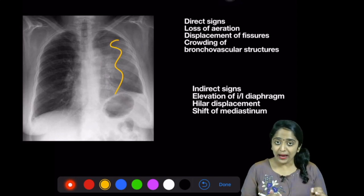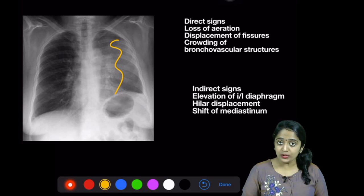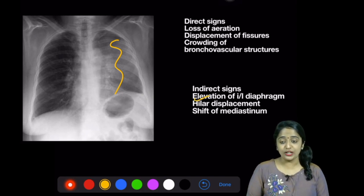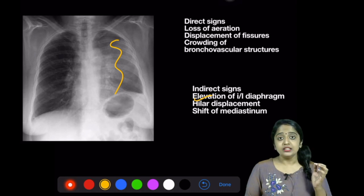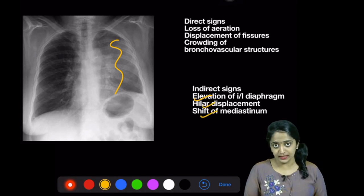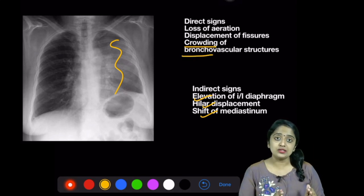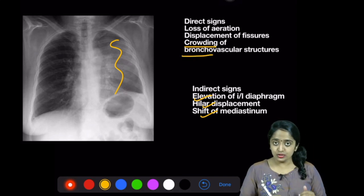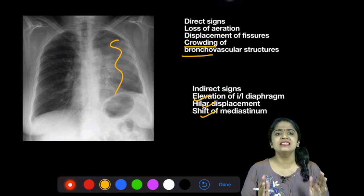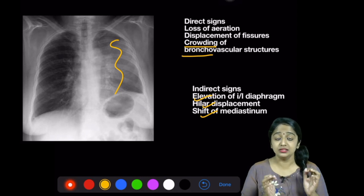Summing up all our positive findings: you have loss of aeration as evidenced by opacity in this radiograph. Along with it, we have features of volume loss in the form of elevation of the left hemidiaphragm, displacement of the hilum, and shift of the mediastinum. And there is definite evidence of bronchovascular marking crowding. So we have opacity with volume loss, satisfying most of the direct and indirect signs of collapse.